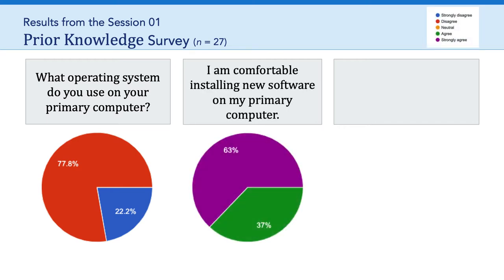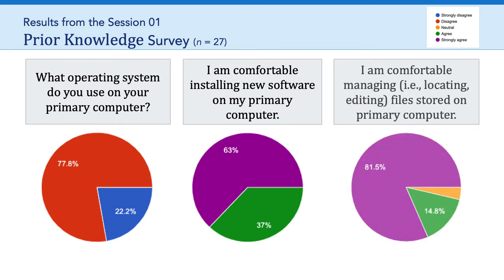The next question was, on a scale from strongly agree to strongly disagree, I am comfortable installing new software on my primary computer. And no worries here — everyone either agrees or strongly agrees that they are comfortable. That's a relief. We see a similar pattern with I am comfortable managing files stored on my primary computer, which is important in programming because we need to know where files are and how they relate to each other.